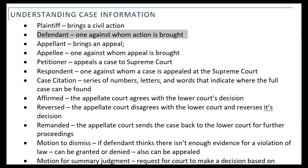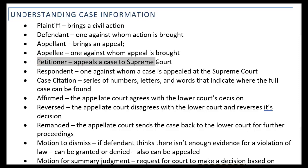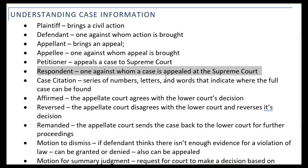An appellant — let's say we have an original court trial with a decision and somebody's not happy with it so they appeal it. The person who appeals the decision is going to be the appellant. They bring the appeal. The person against whom the appeal is brought is the appellee. If we go all the way to the Supreme Court, the person who appeals to that level is called the petitioner, and the person against whom the case is appealed is called the respondent.